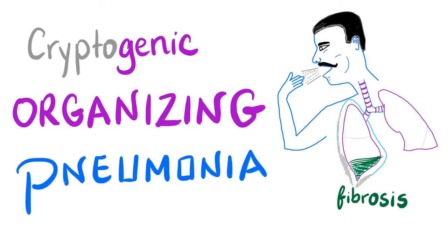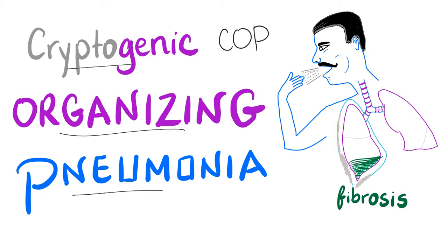Hey guys, it's Medicosis Perfectionals one more time. Today we'll talk about cryptogenic organizing pneumonia, one of the restrictive lung diseases. We call it COP and sometimes we call it BOOP — bronchiolitis obliterans organizing pneumonia.